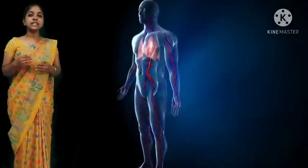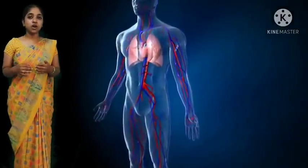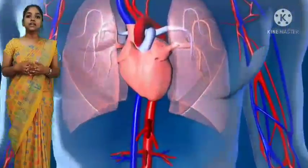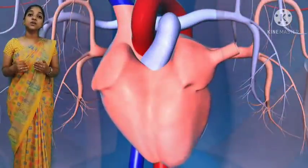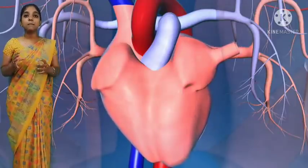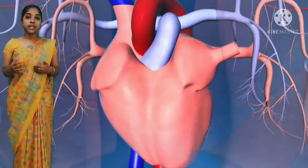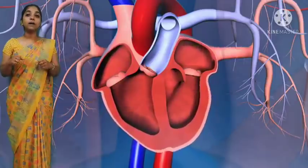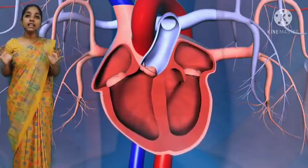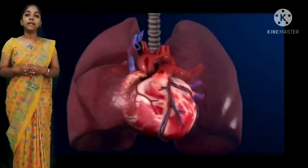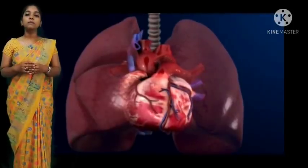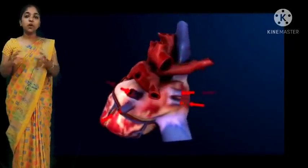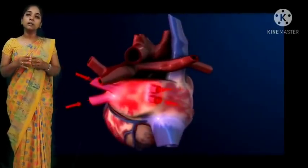Now one by one, I will tell you about each organ. The organs in the circulatory system are heart, blood, and blood vessels. First, the heart. The heart is a muscular organ. It pumps blood to all the parts of the body. It pumps blood into the blood vessels with a pressure.